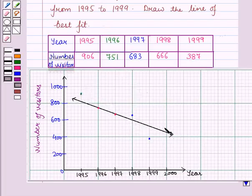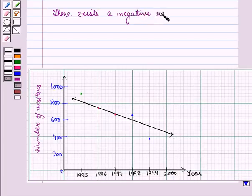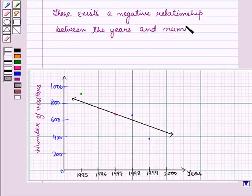This line is moving downwards. There exists a negative relationship between years and number of visitors.